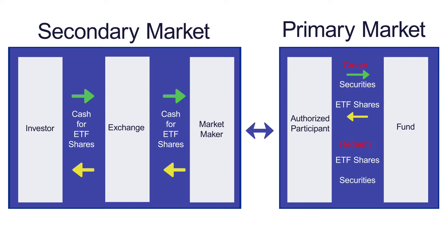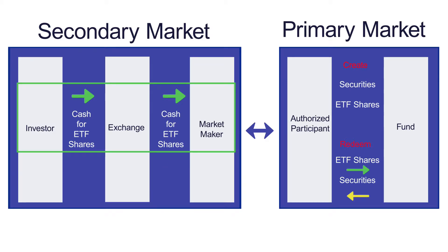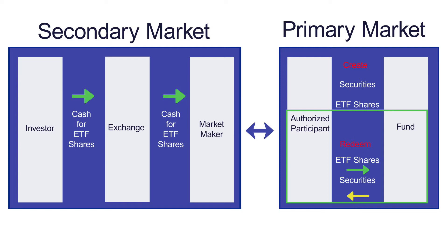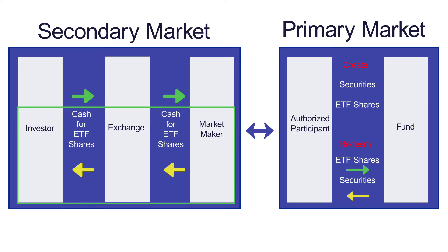Now let's talk about the other side: redemptions. Investors want to sell shares of the ETF, selling those shares to the market maker. The market maker is buying those shares and selling the underlying basket to hedge themselves. At the end of the day, they own more shares of the ETF than they would like, so they go to the fund as an authorized participant and say they would like to redeem those ETF shares. They deliver back those ETF shares, the fund retires those shares, takes the pro-rata basket of assets in the fund, and delivers it back to the market maker — collapsing the short position in the basket they were hedging with throughout the day.